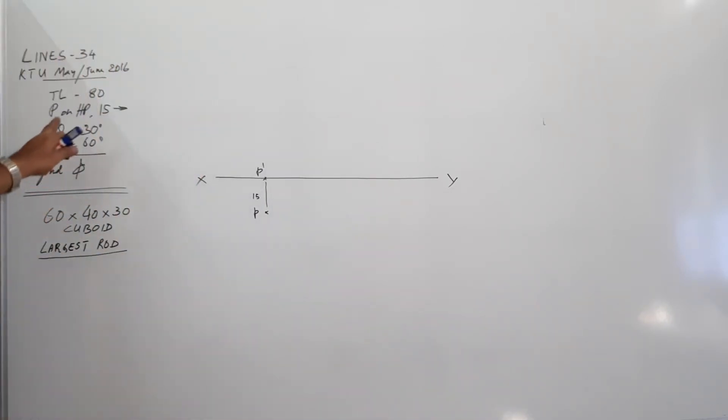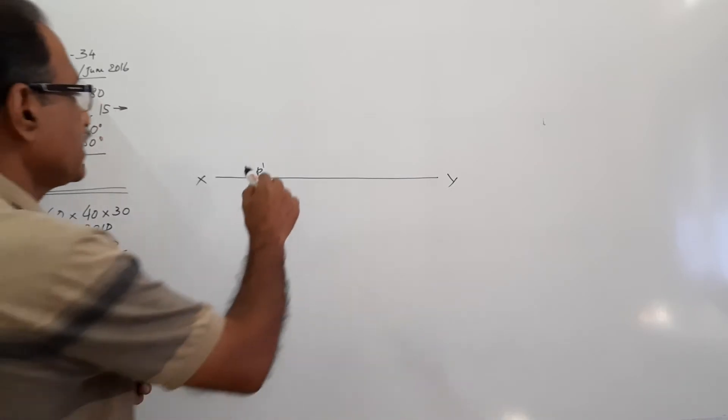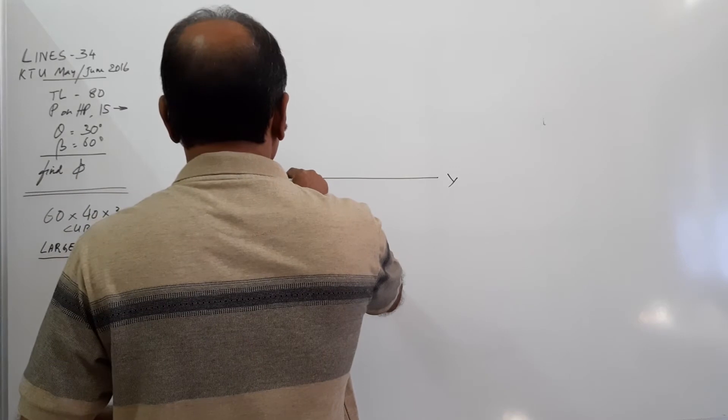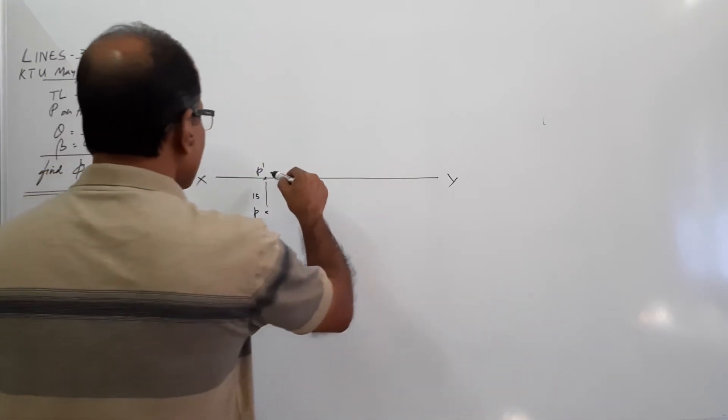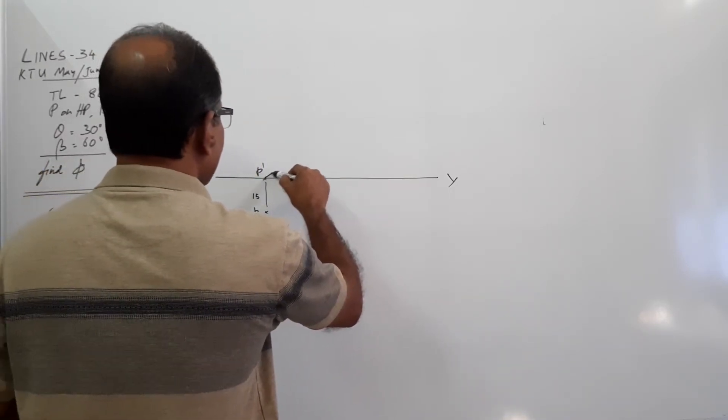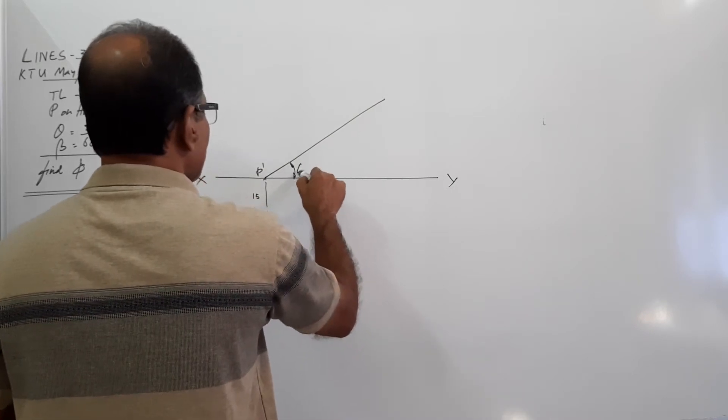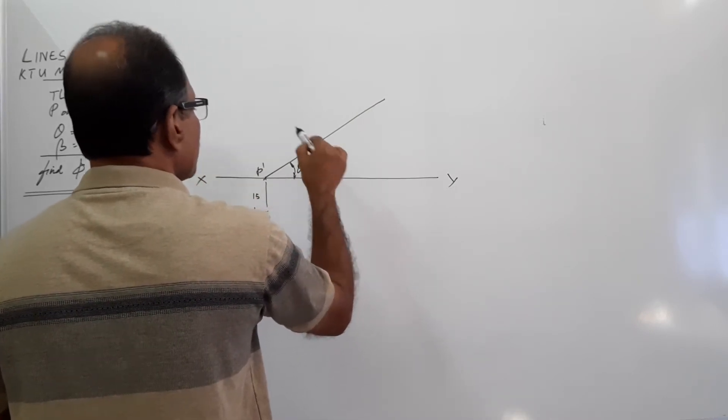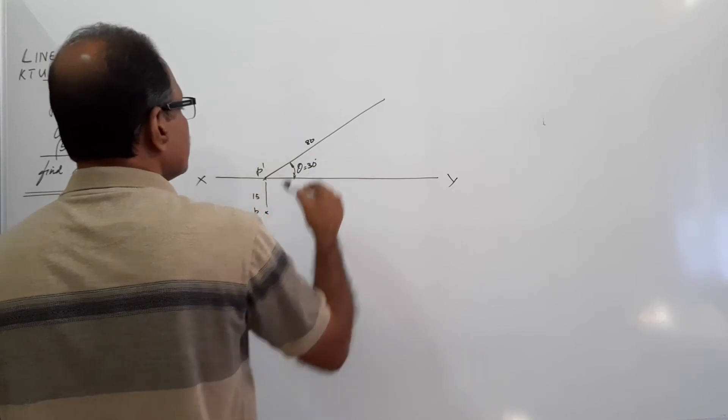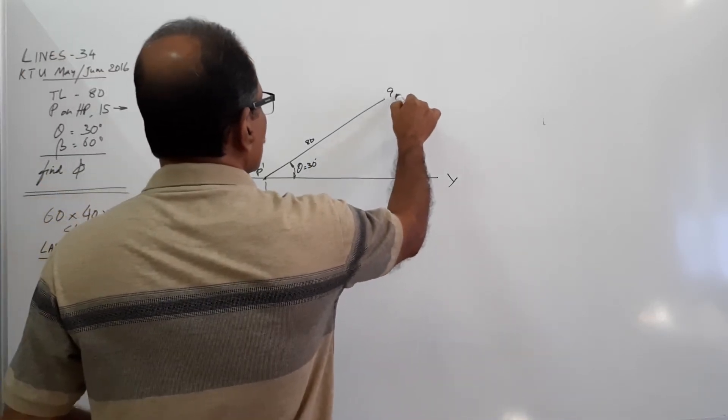True length is given, theta is given. At true length, or with true length, at theta of 30 degrees, draw a line. Theta equals 30, true length 80. What do you get? You get Q1 dash.